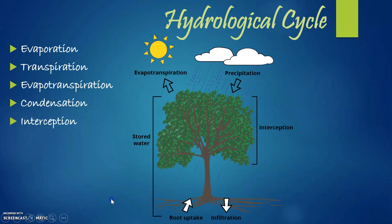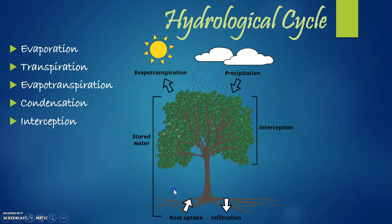The next feature is interception. Precipitation that does not reach the soil — whether in the form of rainfall or snowfall — but is instead intercepted by leaves, branches of plants, and the forest floor is called interception. It mainly occurs in a canopy. As you can see in the picture, precipitation occurs and instead of falling directly to the ground, some water is intercepted by the leaves or branches of plants or the forest floor.